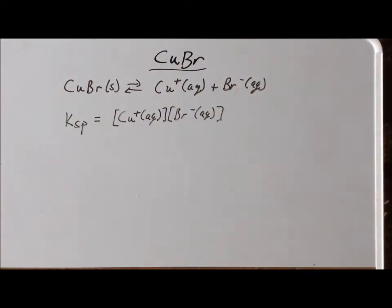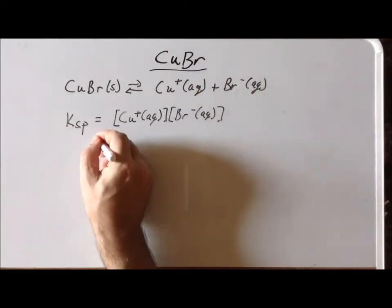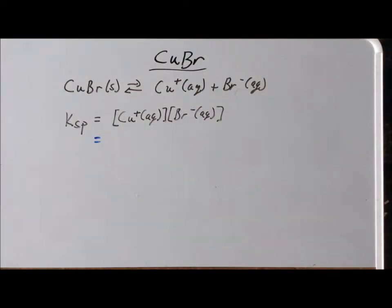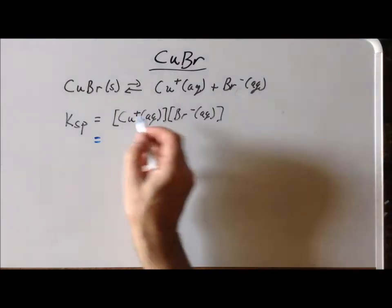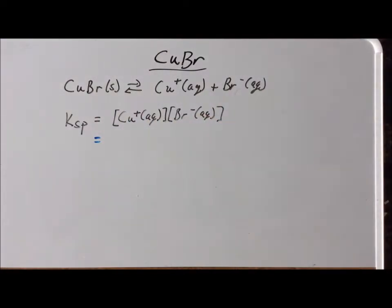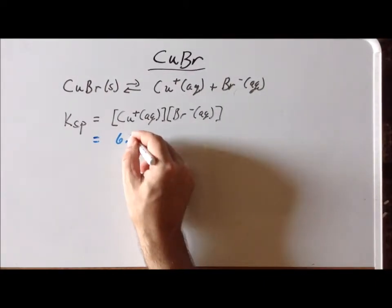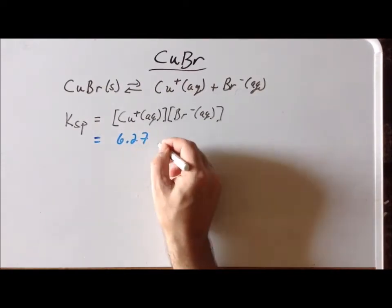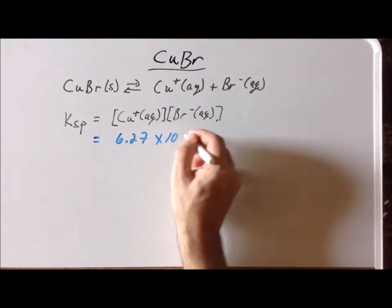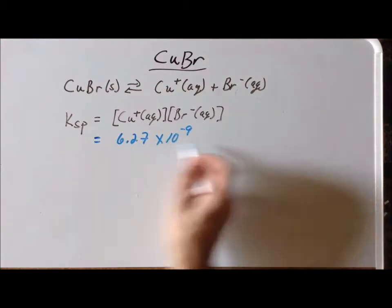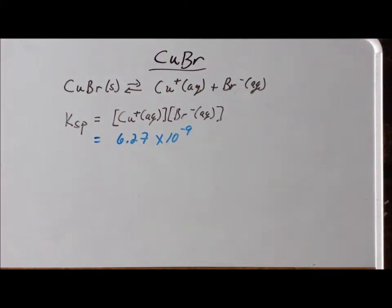We also notice that if we look in a table of data, we can get the exact value of this particular equilibrium constant at 25 degrees centigrade. The value is 6.27 times 10 to the minus 9. Since it's very much smaller than 1, it tells us that we have a very poorly soluble compound.